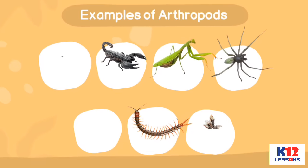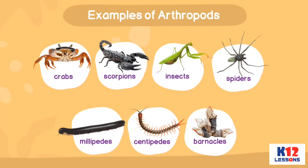Examples of arthropods: crabs, scorpions, insects, spiders, millipedes, centipedes, and barnacles.